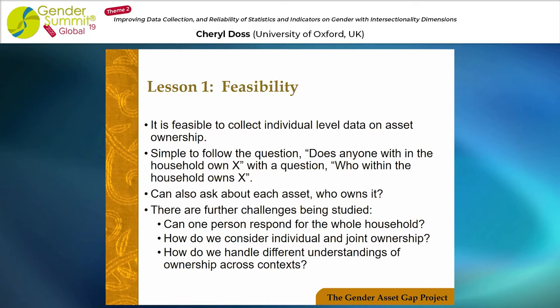There are some challenges that we're still working on. The first is whether one person can respond for the whole household — when you simply ask the primary respondent 'does anyone own it?', are the answers as good as when you ask each individual person? The answer is primarily not as good; we get different answers when we interview multiple people. Also, how we consider individual and joint ownership — how do we understand both when things are jointly owned and what that means for the individuals involved? Third, how do we handle different understandings of ownership across contexts, particularly relevant for land, where what ownership means may vary. But nonetheless, it's feasible to do this.